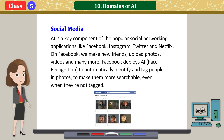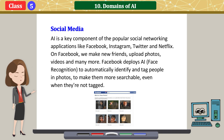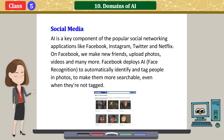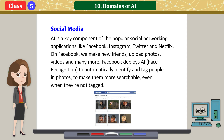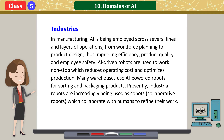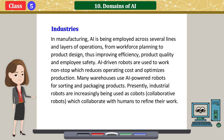AI is a key component of popular social networking applications like Facebook, Instagram, Twitter, and Netflix. On Facebook, we make new friends, upload photos, videos, and much more. Facebook deploys AI to automatically identify and tag people in photos to make them more searchable, even when they are not tagged.